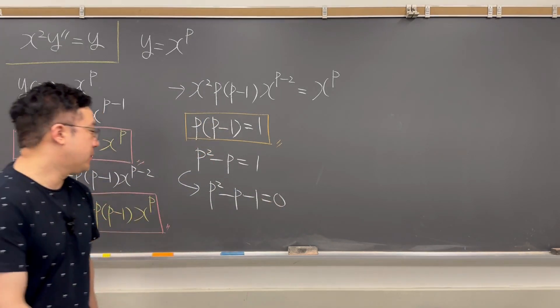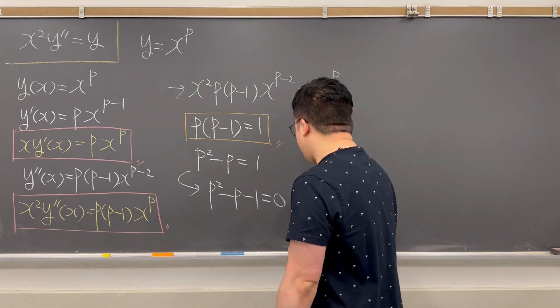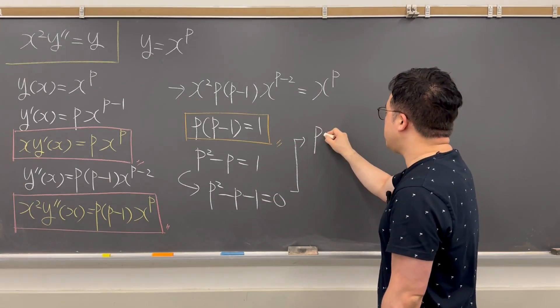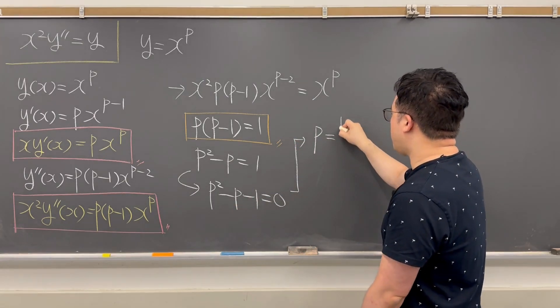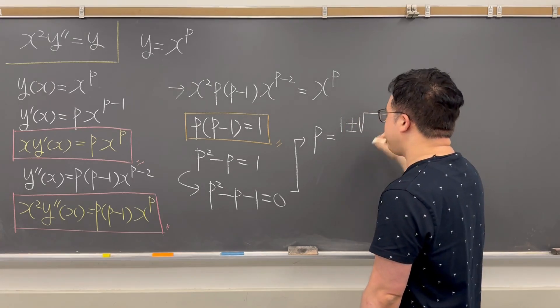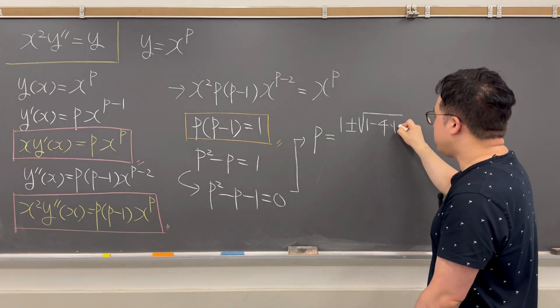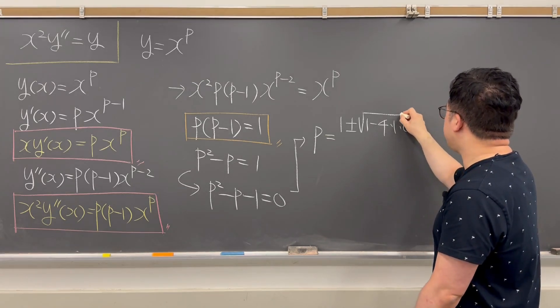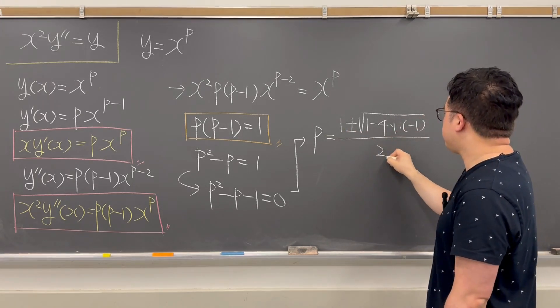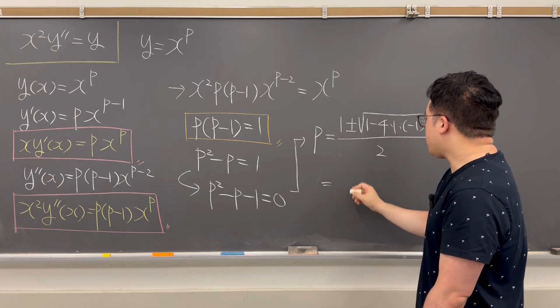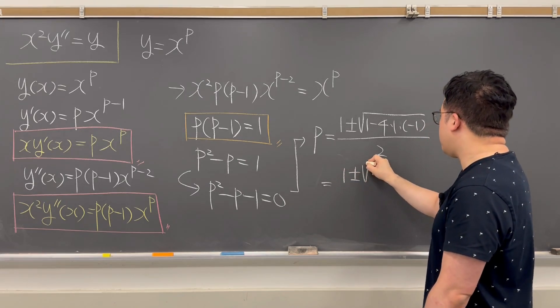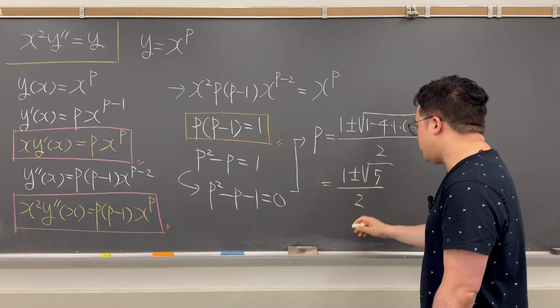Quadratic formula. So if you're using quadratic formula for this, then your p has to be equal to, now, negative p, that is 1 plus minus square root of b squared, which is 1 minus 4 times 1 times negative 1 over 2. So this is going to be 1 plus minus square root of 5 over 2.